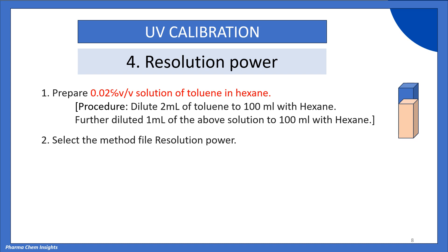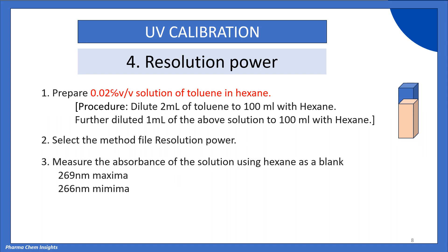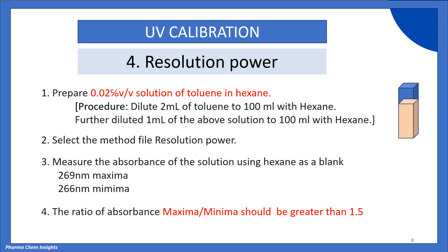Select the method file 'Resolution Power' in the instrument. Then measure the absorbance of the solution using hexane as blank. First measure the 269 nm maxima, then the 266 nm minima. The ratio of absorbance maxima to minima should be greater than 1.5. If it is greater than 1.5, the test will be passed; below 1.5, it is failed. These are all the parameters of UV calibration.